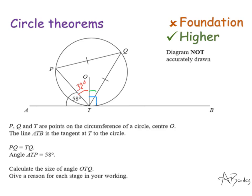This is where a lot of students get stuck because it's a hard circle theorem to spot — the alternate segment theorem. I have a triangle inside my circle where the vertices touch the circumference, and a tangent at one vertex. So this 58-degree angle is alternate to angle PQT up here, meaning angle PQT is also 58 degrees. My reason: the alternate segment theorem.